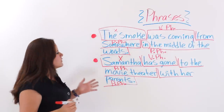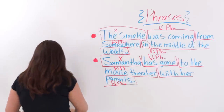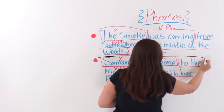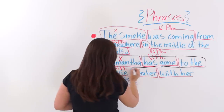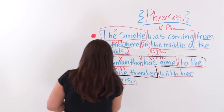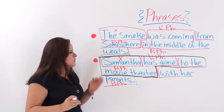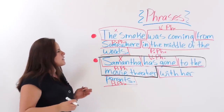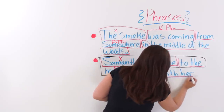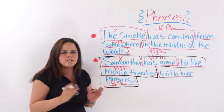If we wanted to turn this into a clause, we would include all of this: 'Samantha has gone to the movie theater.' This would be what we call an independent clause, because we have a subject and a predicate. And 'with her parents' on its own would be a dependent clause, because it doesn't make sense alone.